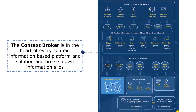I would like to give you now two examples of ways how the context broker is used. The context broker is always at the heart of a context information based platform and solution. It breaks down information silos. You can see the context broker in the center of such an architecture, and at the bottom we have common interfaces. These interfaces are now standardized — this is called NGSI, Next Generation Service Interface, standardized by ETSI, which is a European standardization organization.